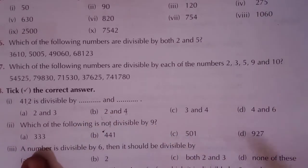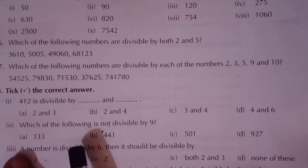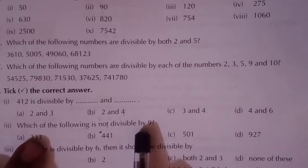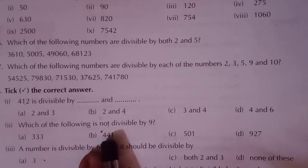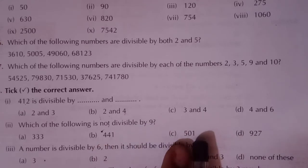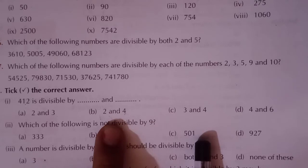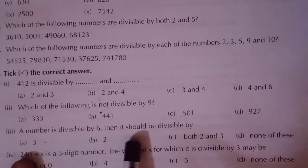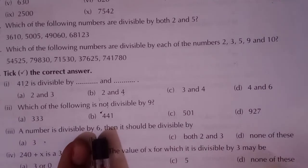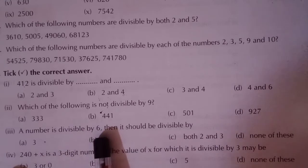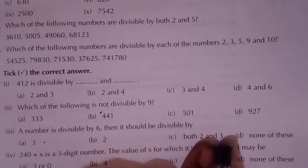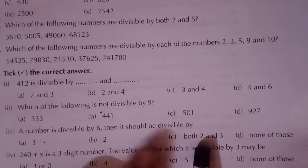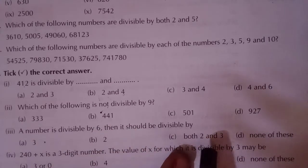Next MCQ: which of the following is not divisible by 9? For 333: sum is 3 plus 3 plus 3 equals 9 — divisible by 9. For 441: 4 plus 4 plus 1 equals 9 — yes, divisible by 9. For 501: 5 plus 1 equals 6 — 6 is not divisible by 9, so 501 is not divisible by 9. That is the answer. Next: a number divisible by 6 should also be divisible by 2 and 3, since 6 equals 2 times 3. So any number divisible by 6 is also divisible by its factors 2 and 3.